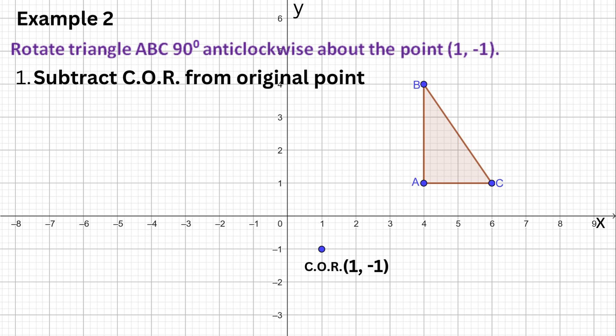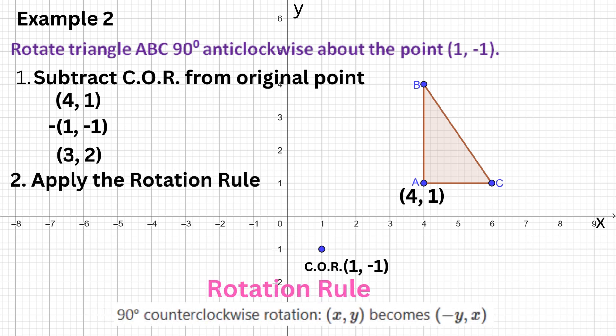Let's begin with point A, which is (4, 1). First, subtract the center of rotation: 4 − 1 = 3, and 1 − (−1) = 2. Next, apply the rotation rule — swap the positions of the coordinates and change the sign of the first number — so (3, 2) becomes (−2, 3).